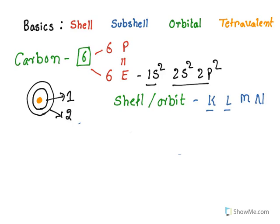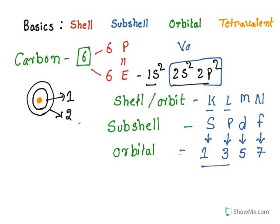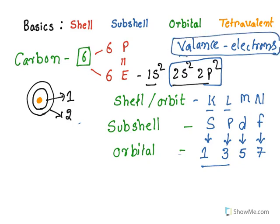In every shell, you have subshells. These subshells are S, P, D, and F. In carbon, you have S and P subshells. After that, you have orbitals — in every subshell, you have a certain number of orbitals. In case of S, you have one orbital; P has three orbitals; D has five orbitals; F has seven orbitals. In carbon, you have only two shells, two subshells S and P, with S corresponding to one orbital and P to three orbitals. The outermost shell — the second shell — is known as the valency shell. The electrons present in this shell are known as valency electrons, and these play an important role in chemical bonding because they are the electrons that participate in chemical bonding.